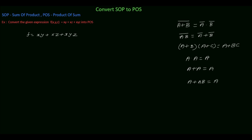First, take the complement of the function: f complement equal to (xy plus xz plus xyz) complement. De Morgan's theorem states that (a plus b) complement equal to a complement dot b complement. So expanding based on this theorem: f complement equal to (xy) complement dot (xz) complement dot (xyz) complement.